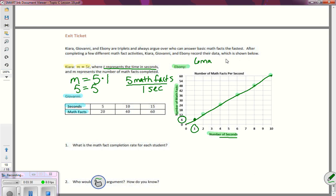So six math facts per one second. I could also take that information and I could see that two seconds, she had 12 facts done. So I could take my two seconds, 12 facts, make an equivalent ratio.